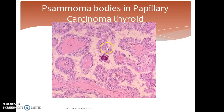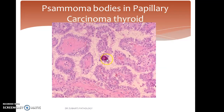Psammoma bodies in papillary carcinoma of the thyroid: what we have here are multiple papillae with optically clear nuclei, also called orphan Annie nuclei. Our attention should be drawn towards the calcified concentric lamellae of psammoma bodies visible in this slide.